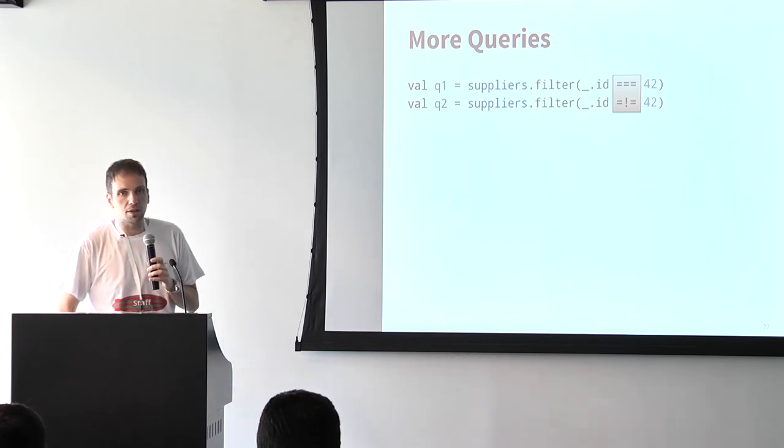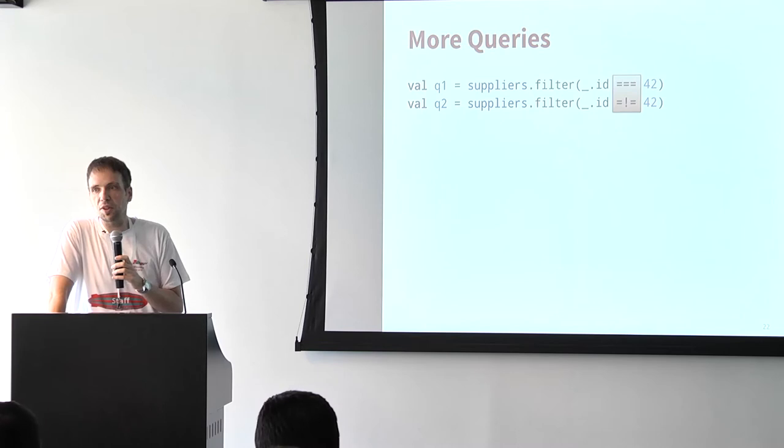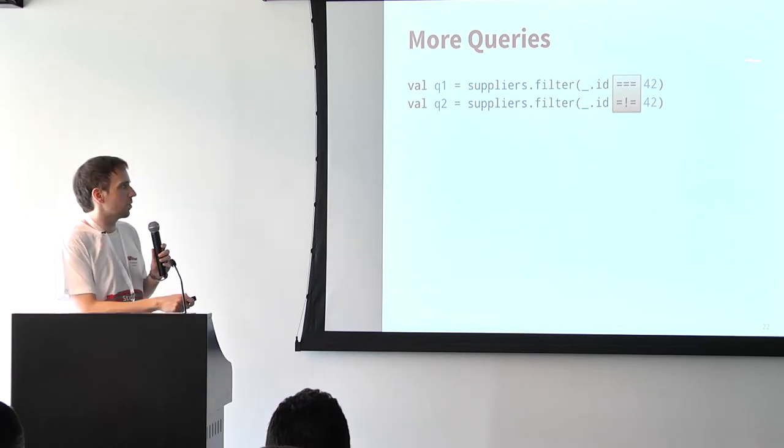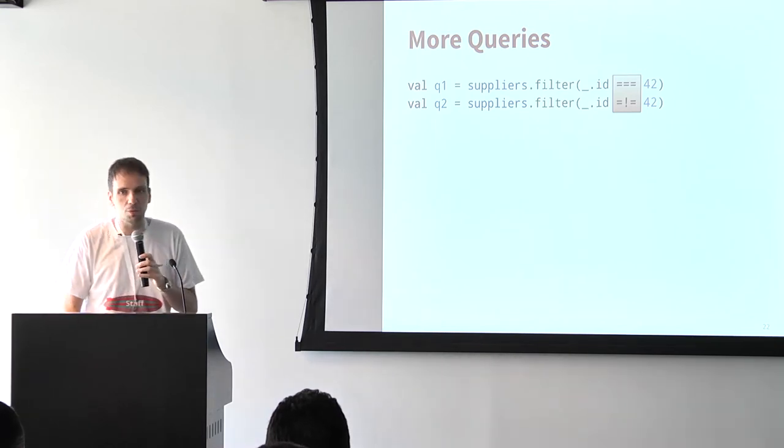There's one caveat with operators: there are two standard operators in Scala that we cannot change — `==` and `!=` — because these are defined on `AnyRef` or `Any`. There's no way to override them to mean what we want, and the worst thing is if you write the wrong version we cannot catch that at compile time. You always need the triple equals `===` and `=!=` here. Always just add another equal sign when writing this for Slick. This is one of the very few differences you have to look out for — in other cases we're really trying to get closer and closer to the collections API.